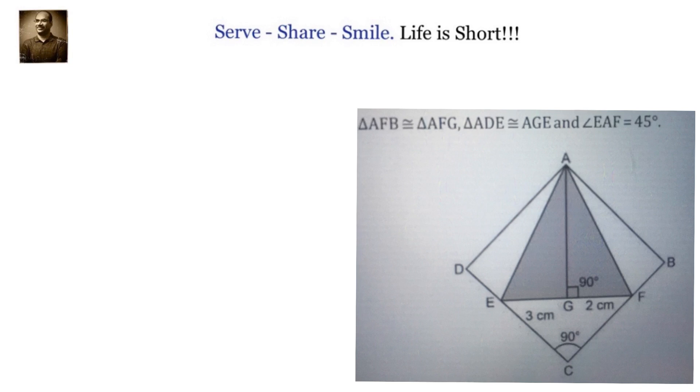We have to find out the area of the shaded region. So let me repeat that again, we have been given triangle AFB congruent to AFG and ADE congruent to AGE and EAF is 45 degrees. We have to calculate the area of the shaded region.